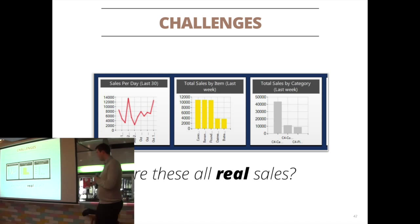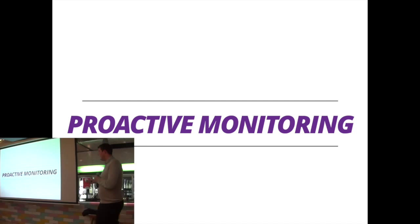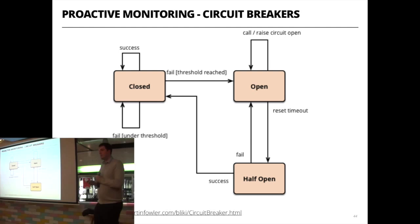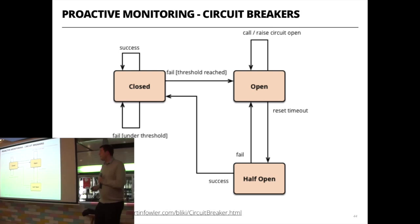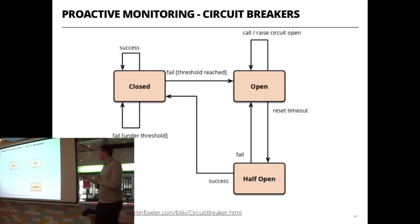Another technique is proactive monitoring. I'm going to talk about this in the context of Hystrix, developed by Netflix and open-sourced. The basic idea behind Hystrix is to give your system a level of antifragility — so that if it does fail, it fails in a controlled way and can recover. It uses a concept called circuit breakers. In our system's context, a circuit breaker sits between calls of two different services. Initially it starts in a closed state, meaning any call from the Crypto Square service to the Square Sizer service goes through normally and everything operates nicely.